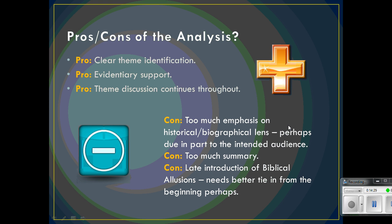Some of the cons I found: there was a little too much emphasis on historical and biographical lenses, perhaps due in part to the intended audience. Part of that rhetorical approach is knowing your audience. For you in this class, your intended audience is me and your classmates, so you don't need to provide nearly as much. Plus, we've somewhat discredited in literary analysis today that whole overemphasis on historical and biographical — they are relevant, but they don't lend themselves to deeper analysis. I might call it a little too much background information.